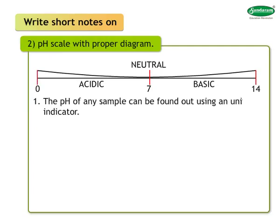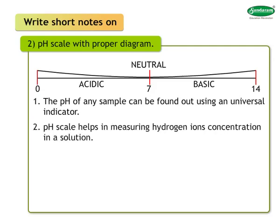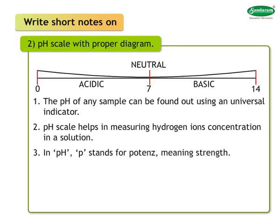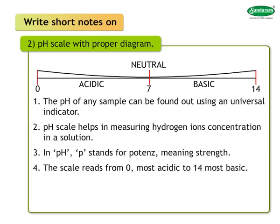Two: pH scale with proper diagram. Answer: The pH of any sample can be found out using a universal indicator. The pH scale helps in measuring hydrogen ion concentration in a solution. In pH, 'p' stands for potence, meaning strength.